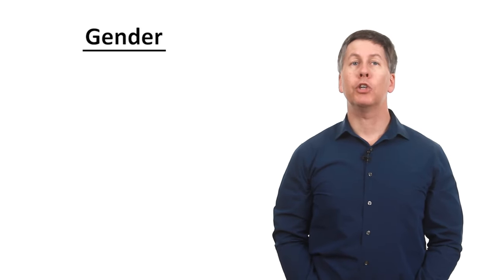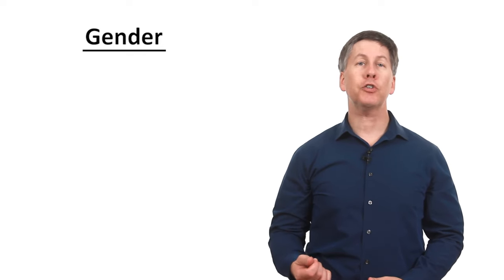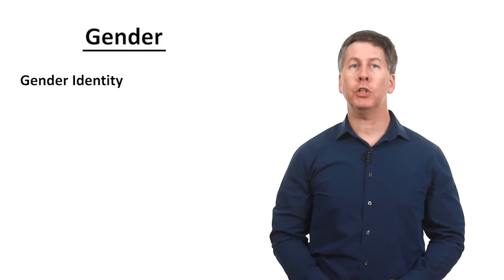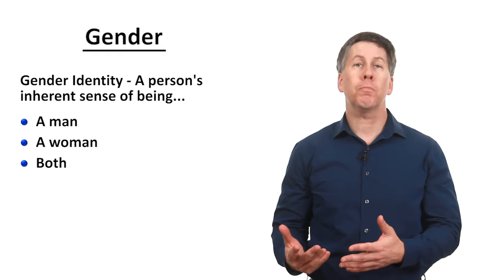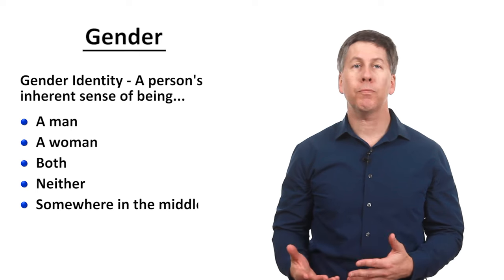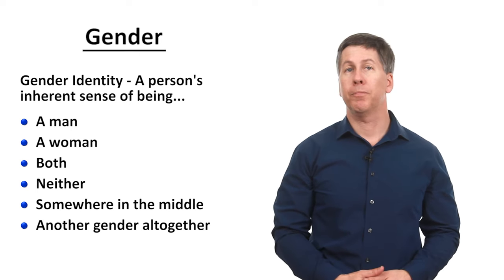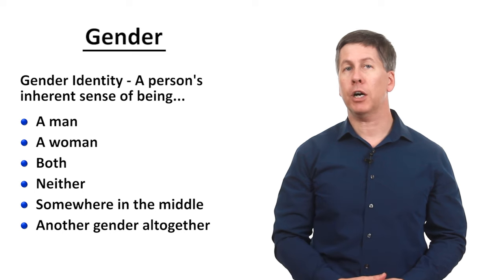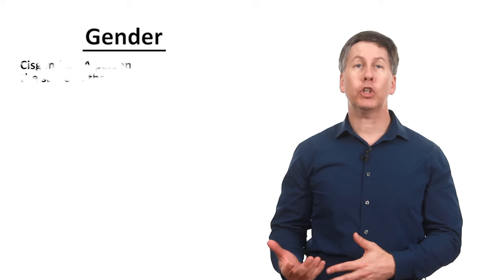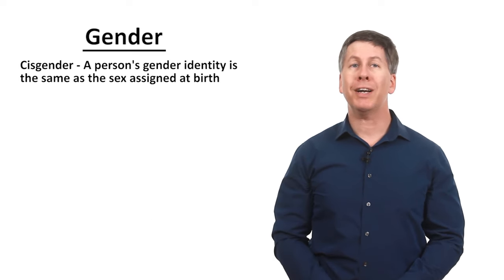The next broad domain is gender. Gender can be seen as having two main characteristics. First is gender identity. This is a person's inherent sense of being a man or a woman, or both, neither, somewhere in the middle, or another gender altogether. Gender identity is internal and is not visible to others. Cisgender describes a person whose gender identity is the same as the sex assigned to them at birth.